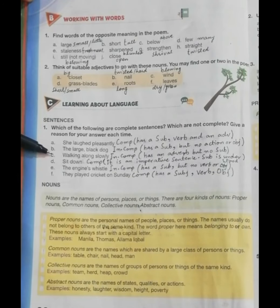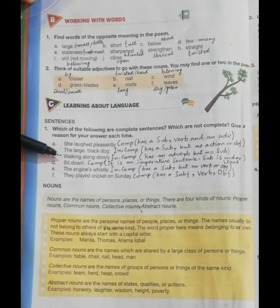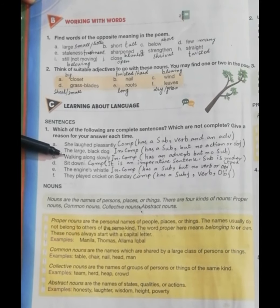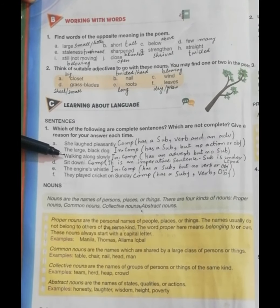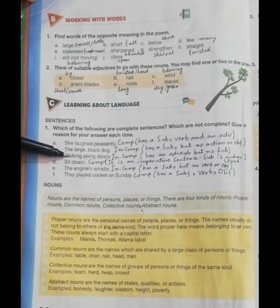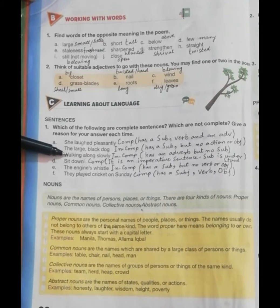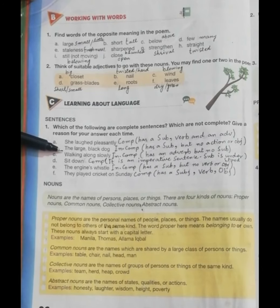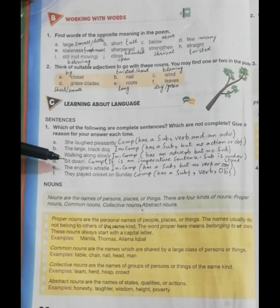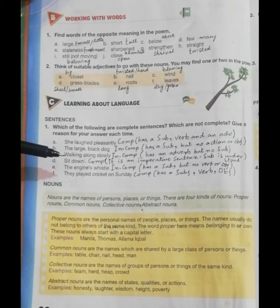The group of words 'walking along slowly' is also incomplete — it is a sort of phrase because it has no subject; it has an adverb and a gerund but is not a complete sentence. The next one is 'Sit down,' which is a complete sentence. It is an imperative sentence and the subject 'you' is understood.